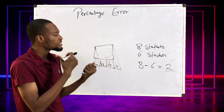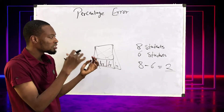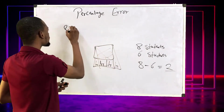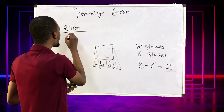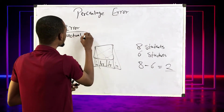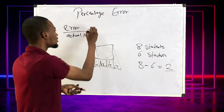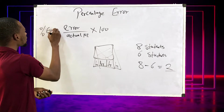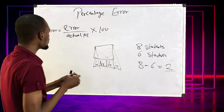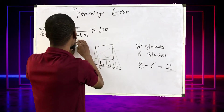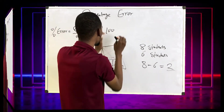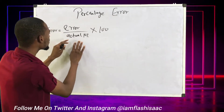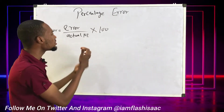Percentage error is simply the error over the actual number or actual value, times 100. So this is your percent error or percentage error — the error you made over the actual number times 100.